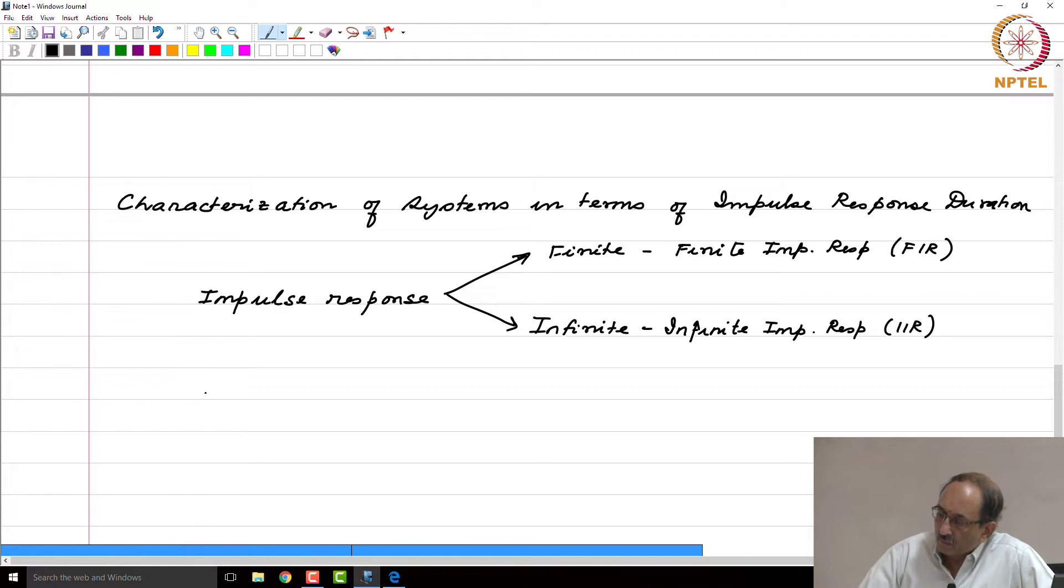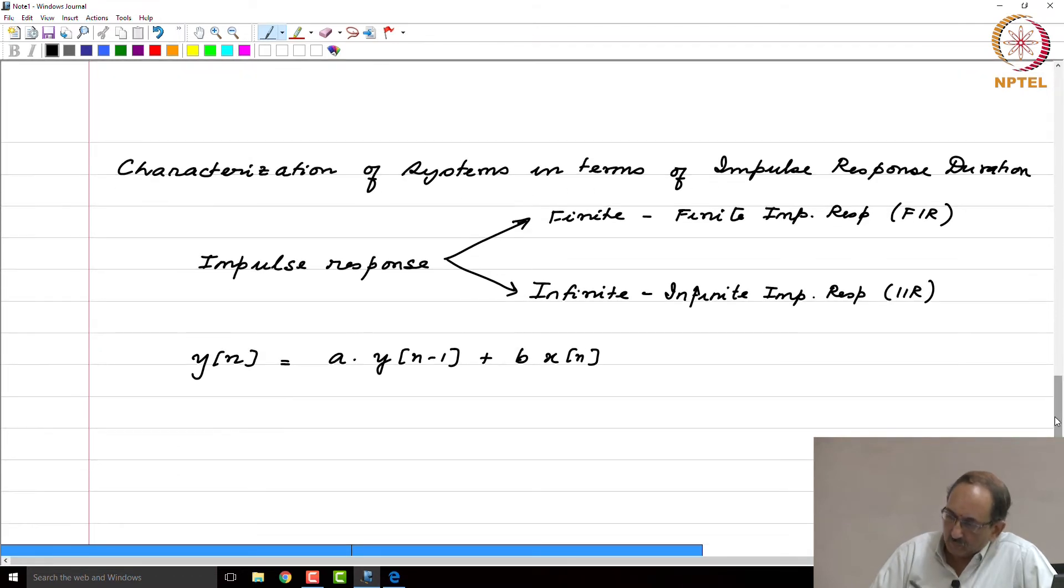Let us look at this simple difference equation: y(n) = A*y(n-1) + B*x(n). We will assume y(-1) = 0 and let x(n) = δ(n).